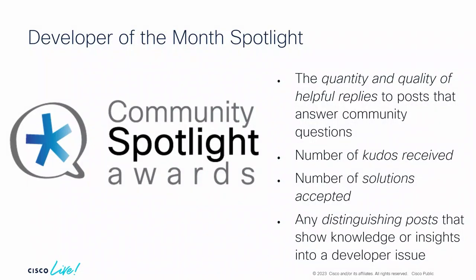Recognition is super important in the community. Our main recognition right now at the Cisco community is the Developer Spotlight of the Month. We nominate someone every month — it cannot be a Cisco person, and it cannot be a community VIP who has already been recognized. So we try to find someone new every month to recognize them. They get a nice trophy, they get recognition, and it helps build their reputation toward getting a Cisco VIP. To become a spotlight winner, we look at the quantity and quality of helpful replies, kudos received, solutions accepted, and distinguishing posts that show knowledge or insight into a topic.